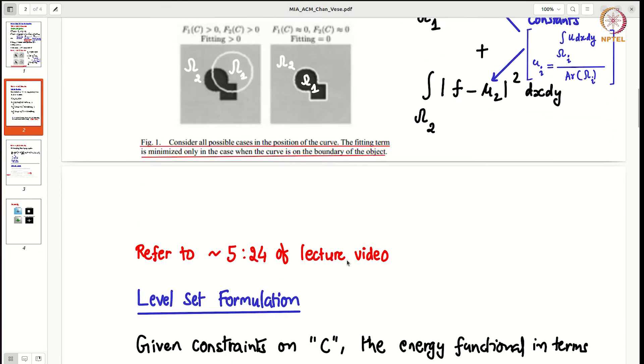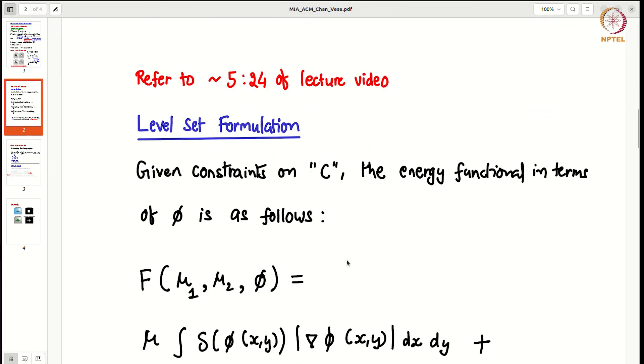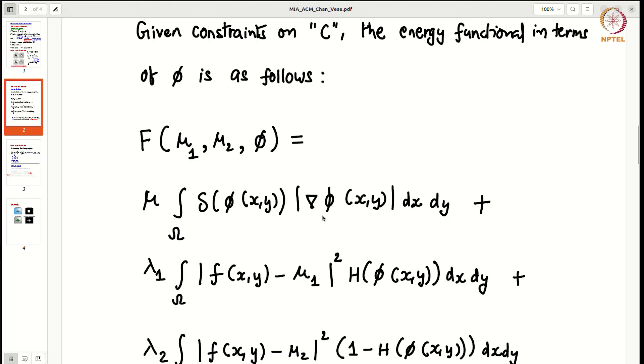This is also a level set formulation method. Although the function is different, it has a level set formulation. What happens in level set formulation is given constraints on C, we define an energy function in terms of phi. In case of Chan-Vese model this functional F is this.